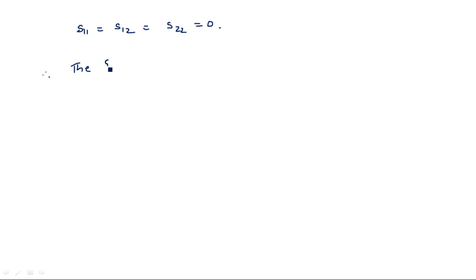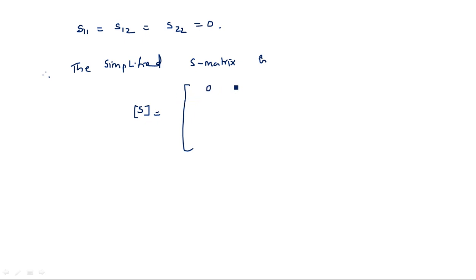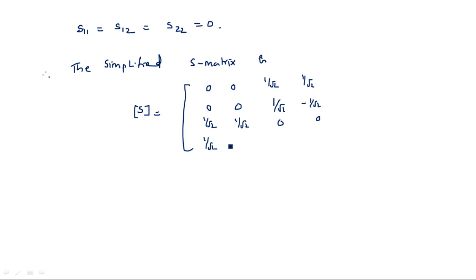Therefore, the simplified S-matrix for the Magic T junction is: Row 1: 0, 0, 1/√2, 1/√2; Row 2: 0, 0, 1/√2, −1/√2; Row 3: 1/√2, 1/√2, 0, 0; Row 4: 1/√2, −1/√2, 0, 0. We can also write this as (1/√2) times the matrix with entries 0, 0, 1, 1; 0, 0, 1, −1; 1, 1, 0, 0; 1, −1, 0, 0.